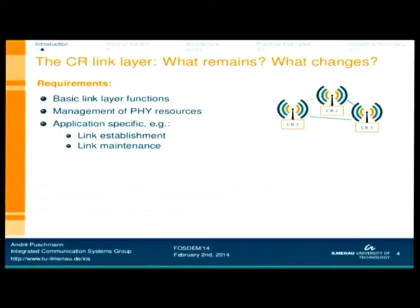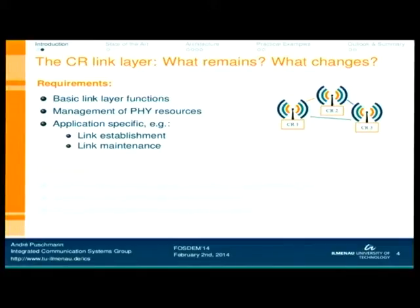The link layer of a radio is basically the layer sitting on top of the physical layer, trying to do the basic link layer functions like framing, error control, flow control, multiplexing, and demultiplexing. A cognitive radio link layer — or a flexible radio link layer — needs to do those basic functions as well, but on top of this it also needs to manage the flexibility that is underneath it, trying to manage the radio resources it has.